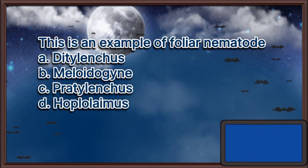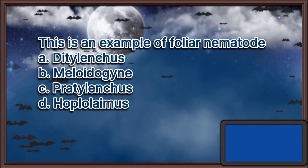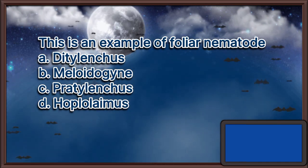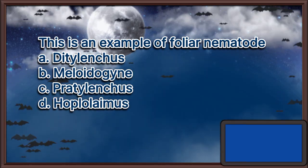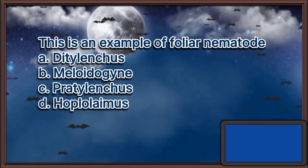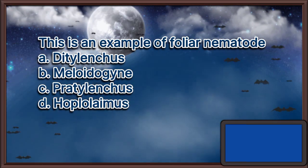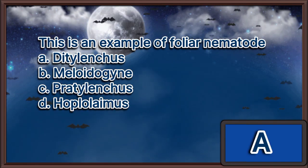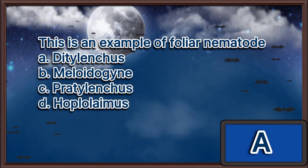This is an example of a foliar nematode. A. Ditylenchus. B. Meloidogyne. C. Pratylenchus. D. Hoplolaimus. The answer is letter A.